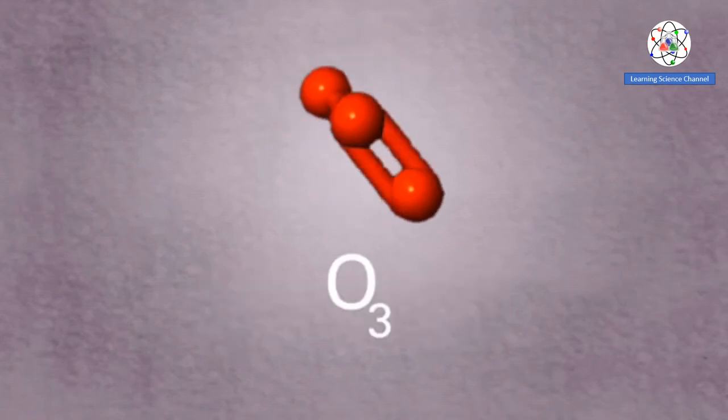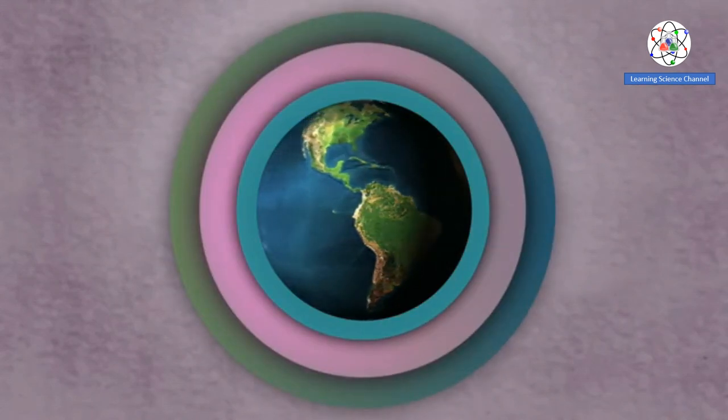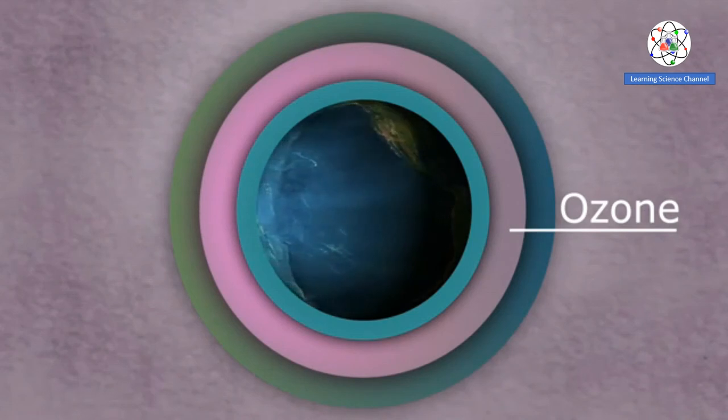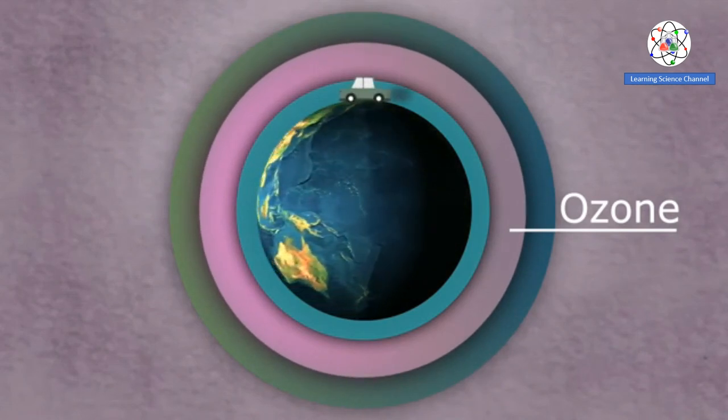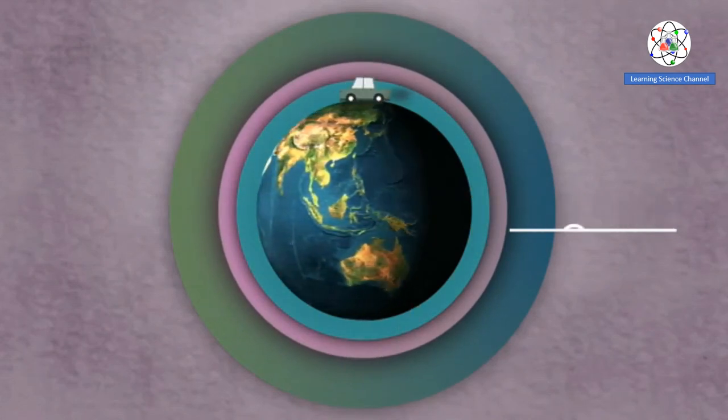Oxygen can also exist as ozone, which forms the ozone layer in the Earth's atmosphere. This ozone is extremely important because it insulates the Earth. However, it is slowly being depleted due to human activities. We have a lesson on that as well.